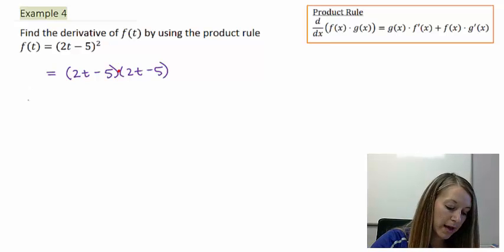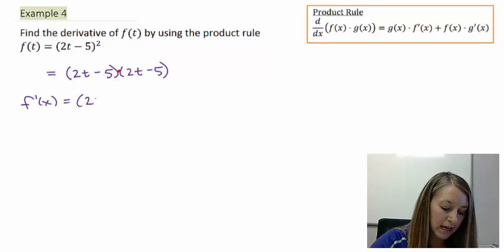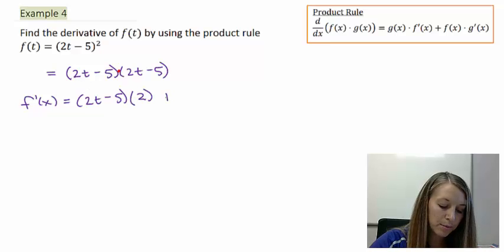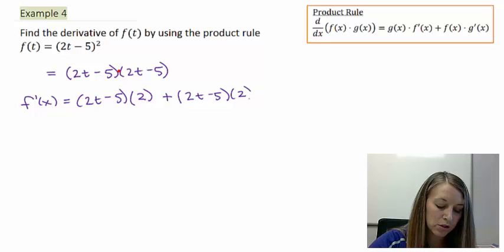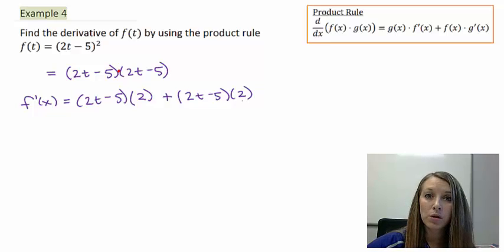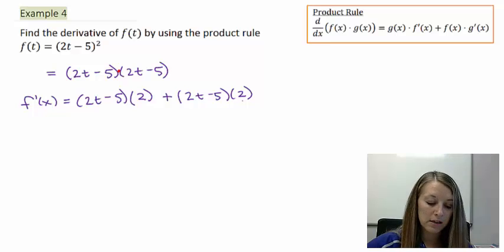So my derivative here is the original of the second times the derivative of my first, which is just 2, plus the original of my first times the derivative of my second, which is 2. Now, this problem is really forgiving since our first function and our second function are exactly the same.